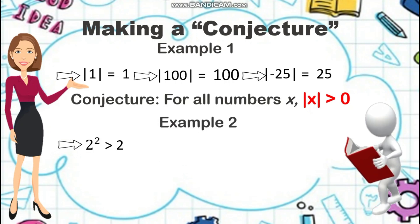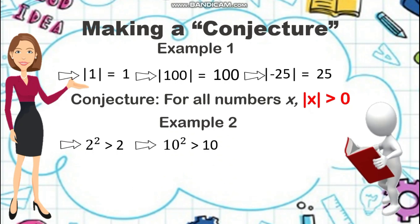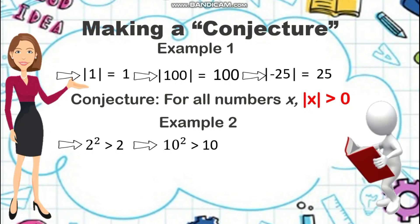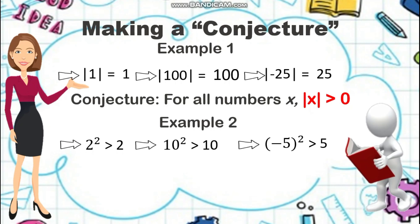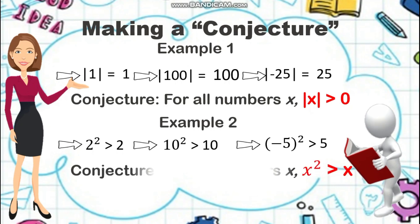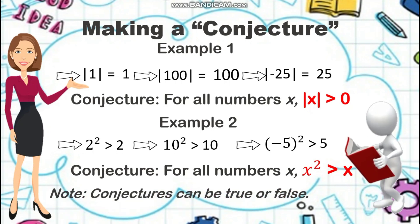Let's have the next example. We have the following situations: 2 squared is greater than 2 — true, since 2 squared equals 4 and 4 is greater than 2. Another: 10 squared is greater than 10 — another true statement, since 100 is greater than 10. And negative 5 squared is greater than 5 — also true, because negative 5 squared equals positive 25 and 25 is greater than 5. So from these examples, the square of any number is greater than the original number. My conjecture is: for all numbers x, x squared is greater than x. Remember: conjectures can be true or false.